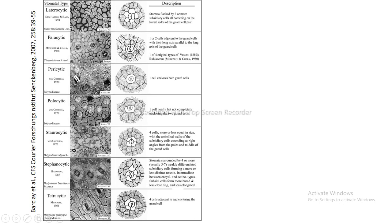Paracytic means two subsidiary cells, each enclosing one of the guard cells, are present such that their longer axis is parallel to the longer axis of the guard cells. One or two cells adjacent to the guard cells with their long axis parallel to the long axis of the guard cell is known as paracytic arrangement.